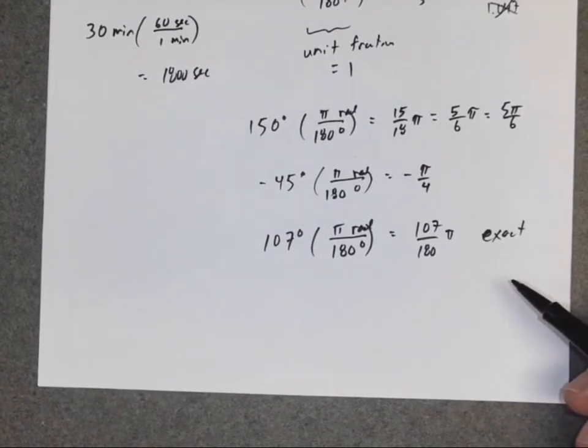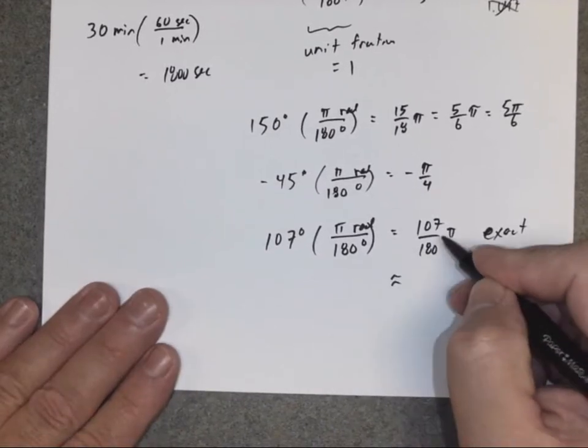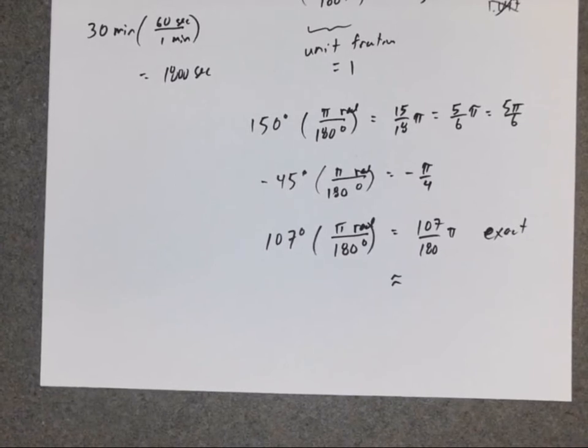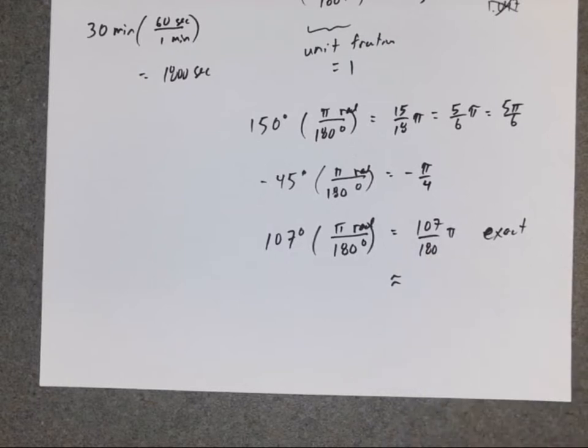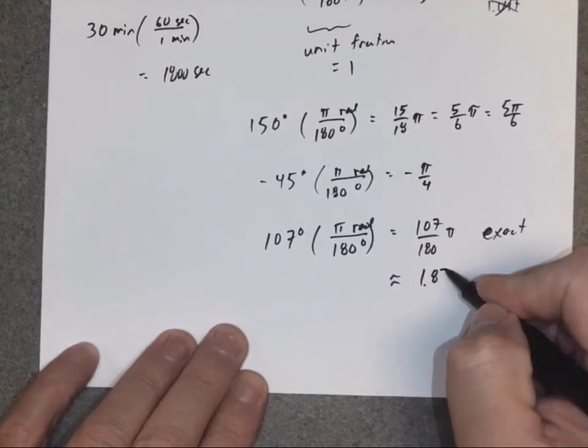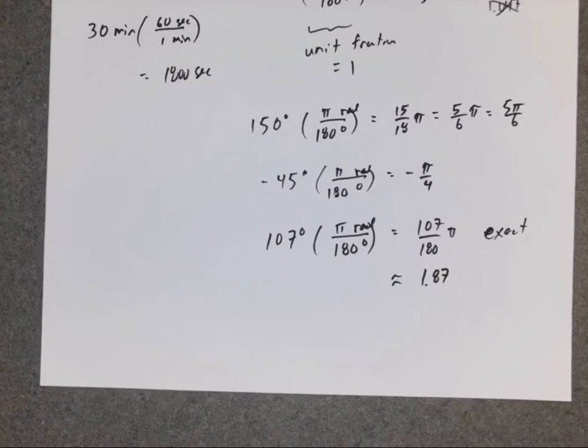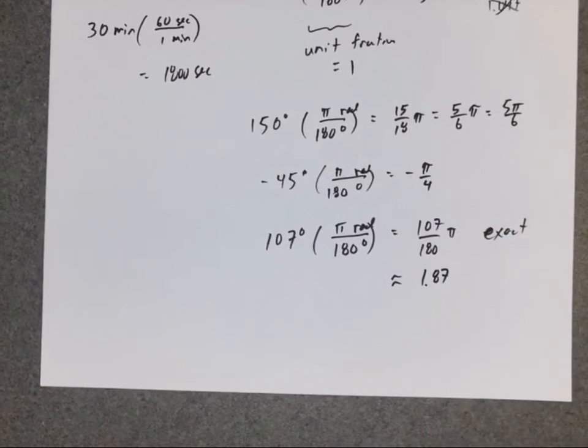But oftentimes in problems like this, where the numbers don't reduce at all, they're sort of big and messy, you'll see they'll ask, write your answer rounded off to two decimal places. When they say that, they're telling you, go ahead, grab your calculator and do this calculation. When they tell you to give the answer rounded to some decimal places, they're basically saying, go ahead and do the math. So I would take 107 times π divided by 180. And if I rounded it, I would say like 1.87 radians. So sometimes they will have you round and give the answer as a decimal, but oftentimes they'll want an exact answer.